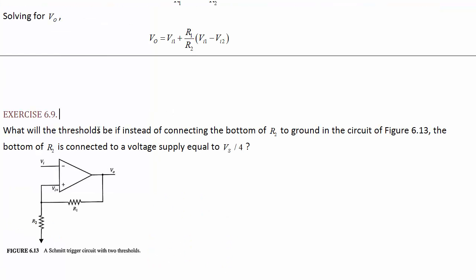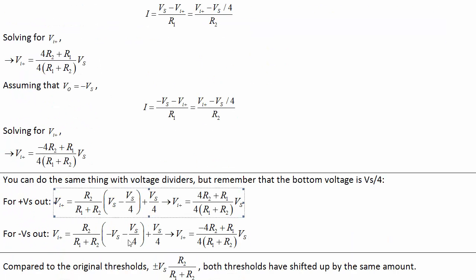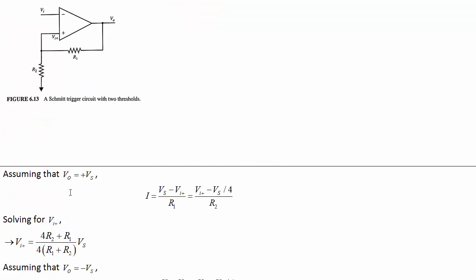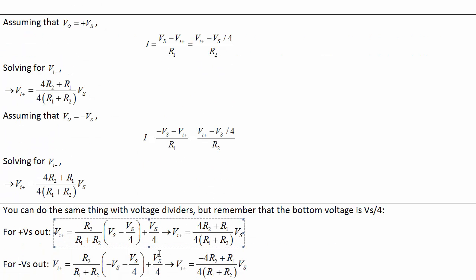Exercise 6.9. What will the thresholds be if instead, in this Schmidt trigger, of connecting the bottom of R2 to ground, we connect it to a voltage supply equal to Vs over 4? Nothing special here. You can analyze the circuit. Just be careful if you're going to use the voltage divider method that you have to subtract the voltage at the bottom. But then you add it back in because we're looking at the voltage at this point. If you use a voltage divider, you can say the voltage is based on the drop across these two resistors. But that's going to be relative to this bottom point. So that's why you add that back in at the end there.